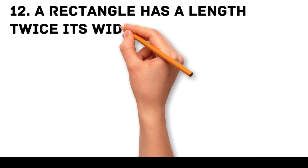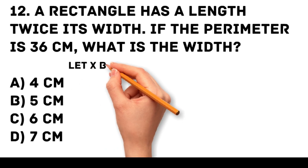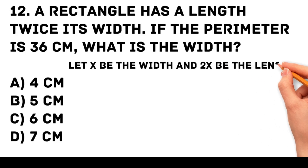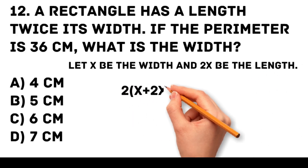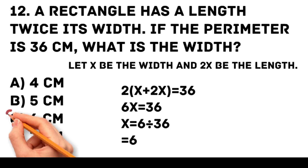Question 12. A rectangle has a length twice its width. If the perimeter is 36 centimeters, what is the width? A. 4 centimeters. B. 5 centimeters. C. 6 centimeters. D. 7 centimeters. Answer: C. 6 centimeters. Let x be the width and 2x be the length. 2(x plus 2x) equals 36. 6x equals 36. x equals 6.